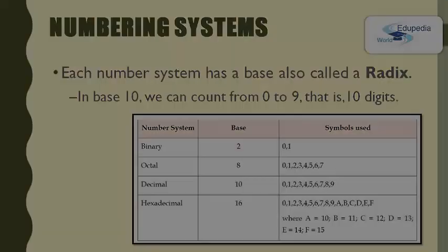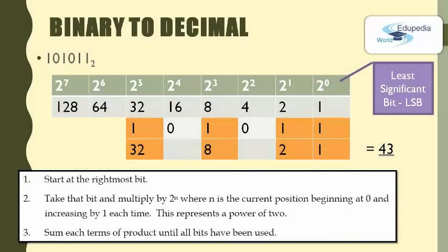We will now move into our first conversion activity: binary to decimal. We are given a binary number. Remember, when you write a number in any number system you should mention the base of the number system except for the decimal number system. The first step is to create a table structure. In the first row, starting from the right side, you write 2 to the power of 0, 2 to the power of 1, 2 to the power of 2, 2 to the power of 3, and so on — representing 2 to the power of N.